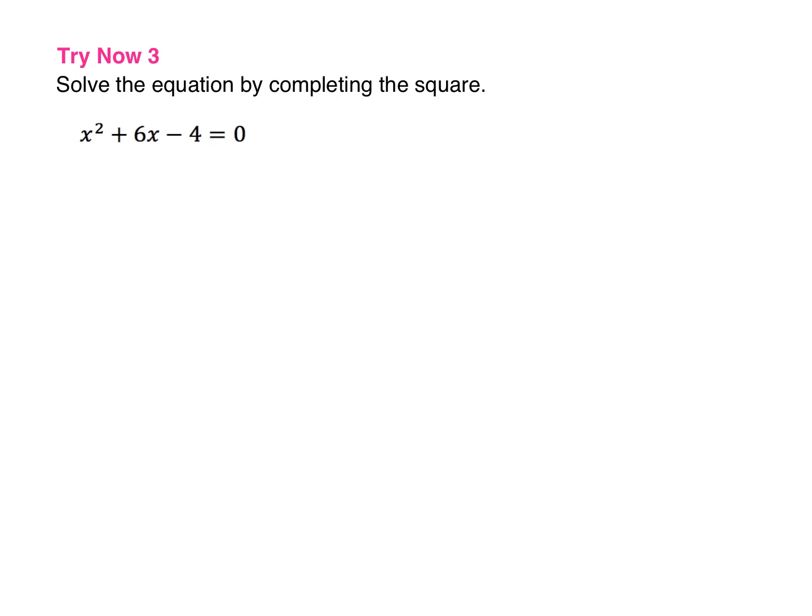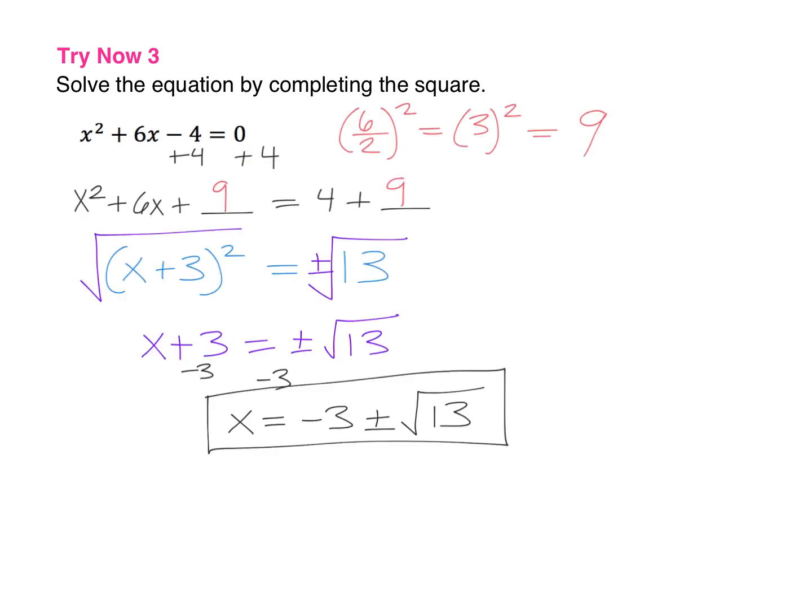Here's a try now problem for you to try on your own — it's just like example 3 that we completed. Go ahead and pause the video right now and give this problem a try. Then when you hit play again, I will have the solution posted. Here is your solution: you should have ended up with the final answer of x equals negative 3 plus or minus the square root of 13. You can look at the work steps here — pause the video if you need to.